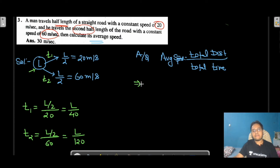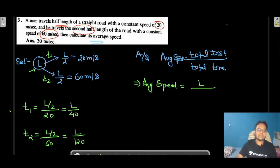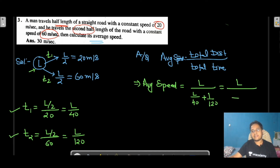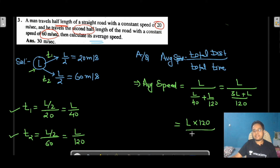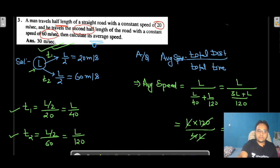Now we have T1 and T2. Average speed = total distance / (T1 + T2) = L / (L/40 + L/120). Taking LCM of 40 and 120, which is 120: L / ((3L + L)/120) = L × 120 / 4L. L cancels, giving 120/4 = 30 m/s. So the answer to Question 3 is 30 m/s.